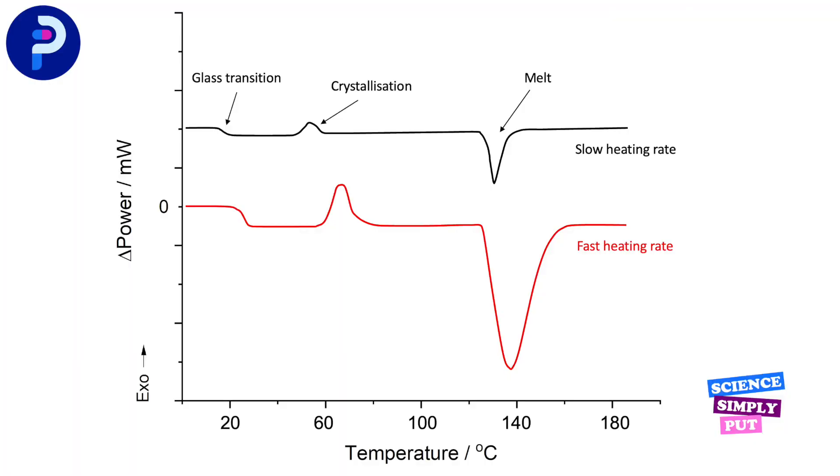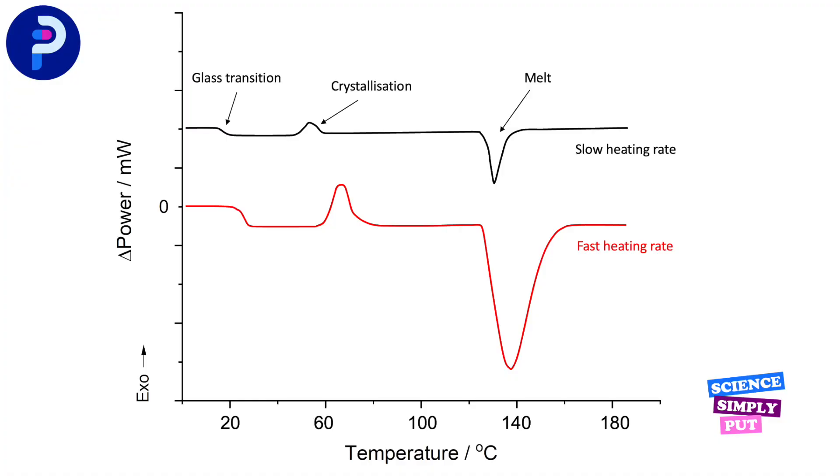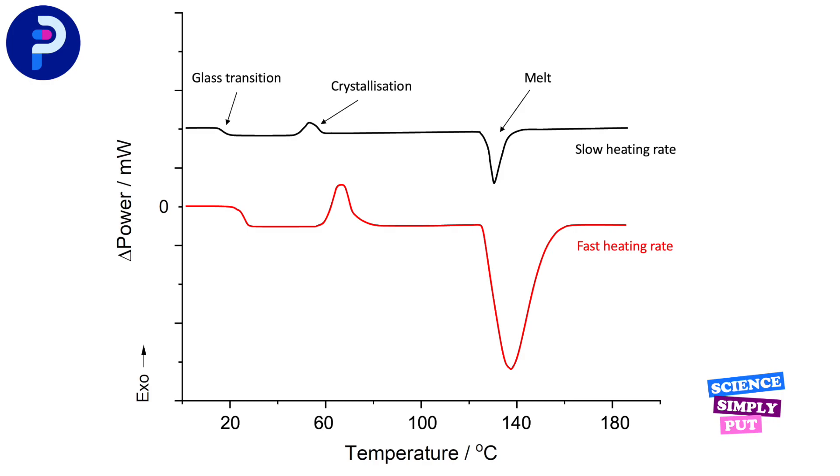What do you think will happen to kinetic events in a DSC at different heating rates? Well, if thermodynamic events are independent of heating rate, the chances are that kinetic events are dependent on heating rate. Here are two sets of DSC data for the same sample at fast and slow heating rates. The sample was an amorphous glass, and the three events we can see are a glass transition, followed by crystallization and then a melt. The melting endotherm appears with the same onset temperature in each experiment, as we would expect, but the crystallization exotherm appears to occur at a higher temperature at the faster heating rate than at the slower one.